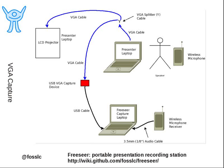A very popular way that we use FreeCR is with a VGA capture device to capture whatever VGA signal is coming from a presenter's laptop. Their laptop can be anything — Windows, macOS, Linux — pretty much anything that sends a VGA signal. We use a Y cable, a splitter cable, to have half the signal go to the VGA capture device and half the signal go to a projector, which the audience sees.